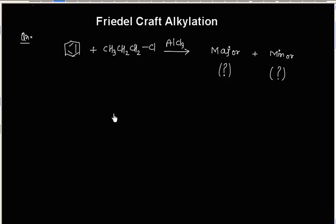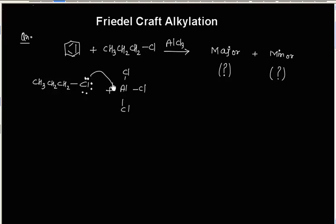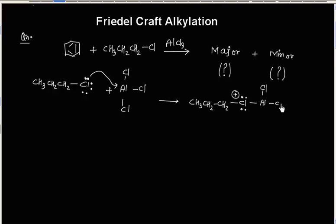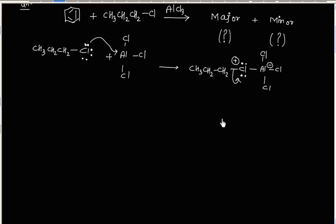This is a Friedel-Craft alkylation reaction. In Friedel-Craft alkylation, initially a carbocation is formed. AlCl3 acts as a Lewis acid — it can gain electrons to form a complex. Chlorine will have a positive formal charge and aluminum will have a negative formal charge. In the next step, we can break this bond to generate a carbocation.